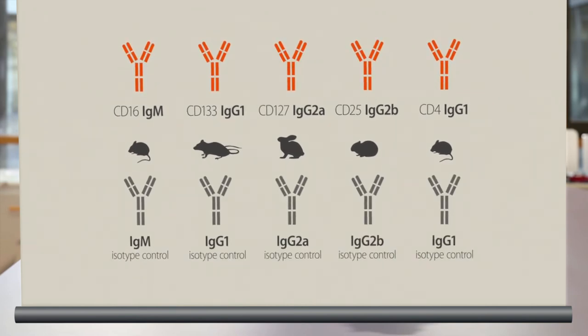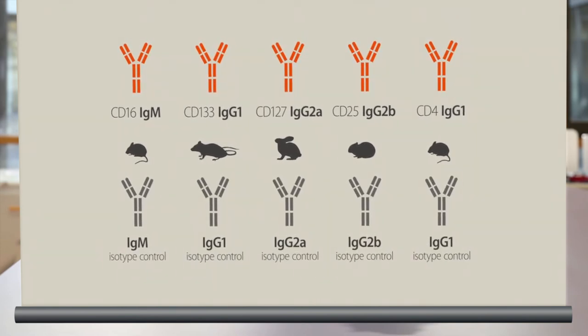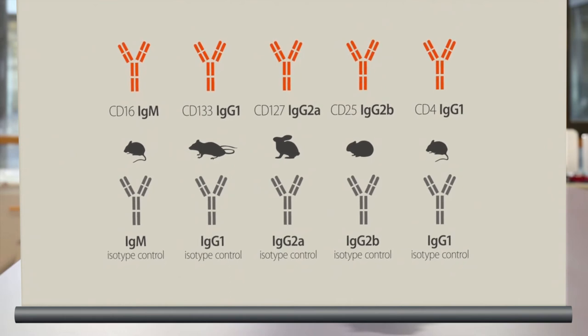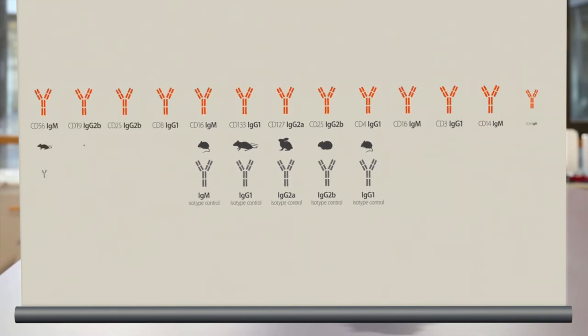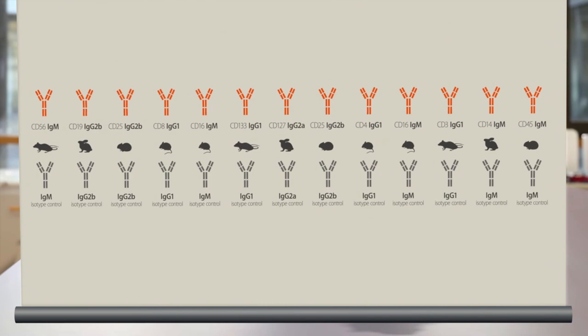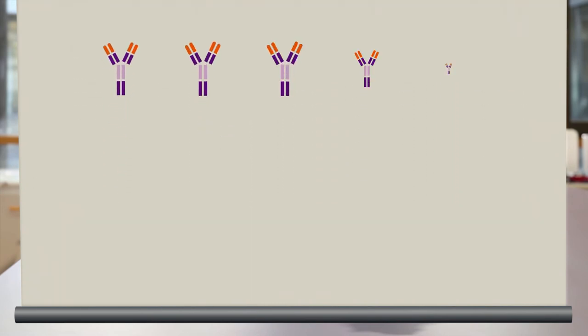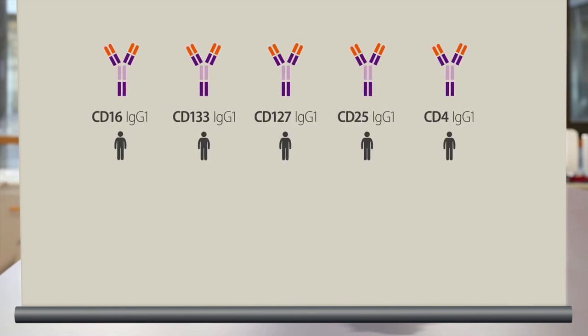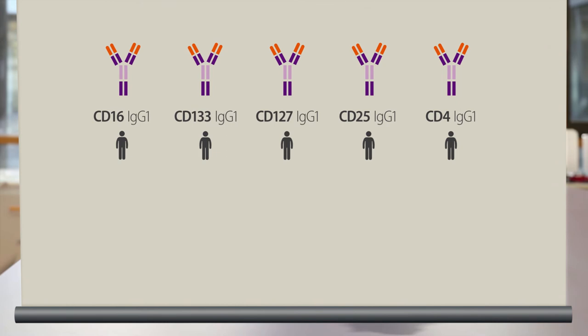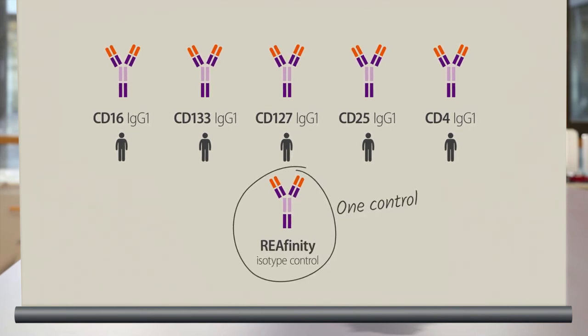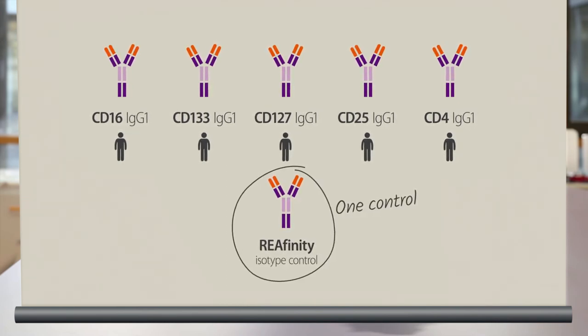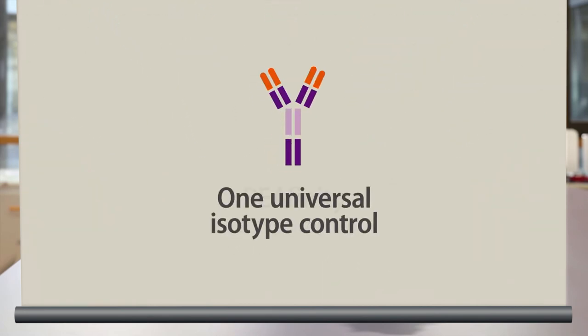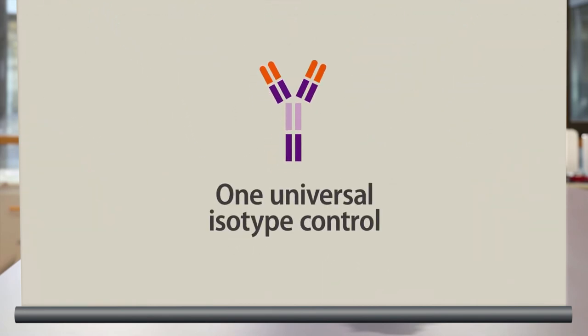When using several antibody panels with individual dye combinations, this can easily add up to dozens of different isotype controls for a single experiment, but not with reaffinity antibodies. Look here. All reaffinity antibodies have the same human IgG1 isotype, which greatly reduces the number of isotype controls required as compared to conventional antibodies. You just need one universal isotype control.